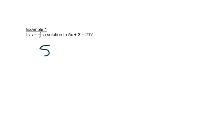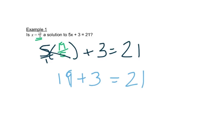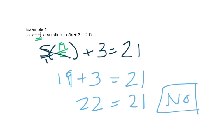In example one, it asks if 19/5 is a solution to the equation. We put 19/5 in place of x, copy everything else, and see if it's a true statement. So 5 times 19/5 — the 5 cancels out — and we're left with 19 plus 3. Does that equal 21? Well, 19 plus 3 is 22, which does not equal 21, so this is not a solution to the equation.